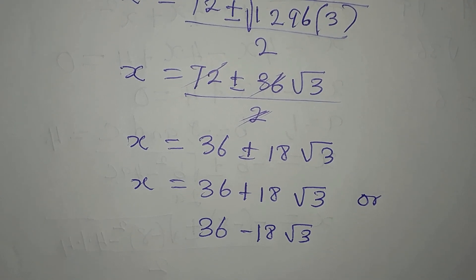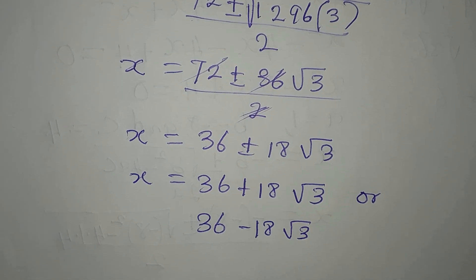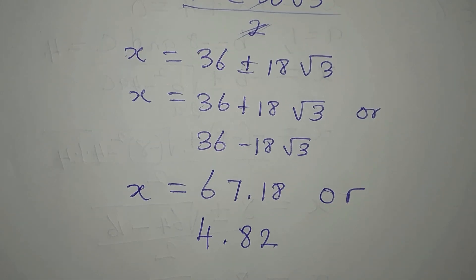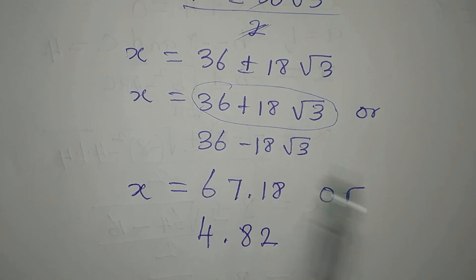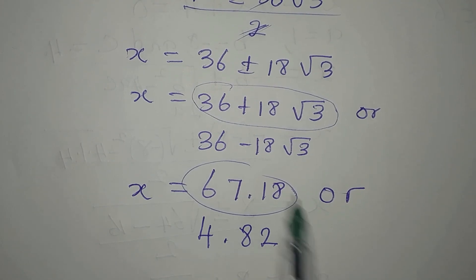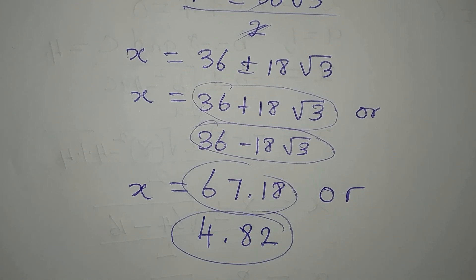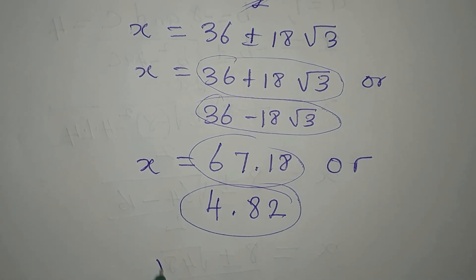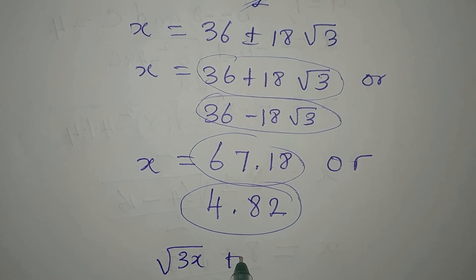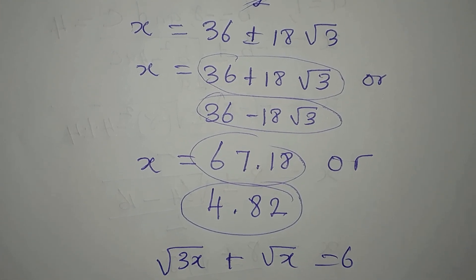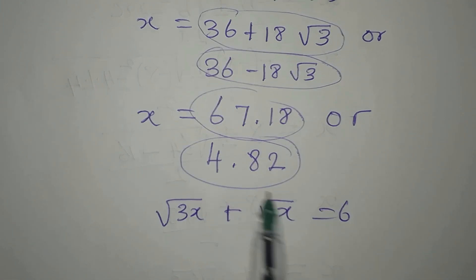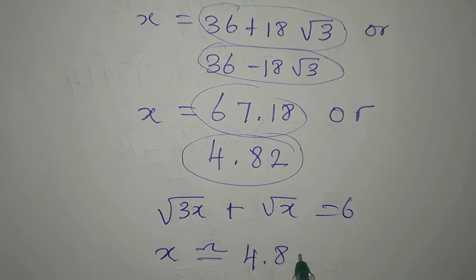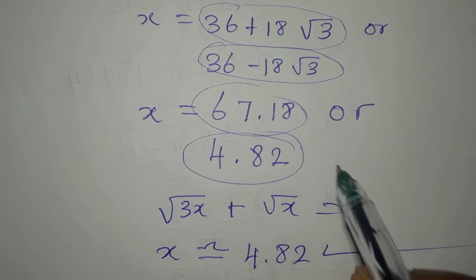But the question is: do both solutions satisfy the original equation, square root of 3x plus square root of x equals 6? Converting to decimal form, only one of them satisfies the equation. The value of x that satisfies this equation is approximately 4.82. Thank you for watching.